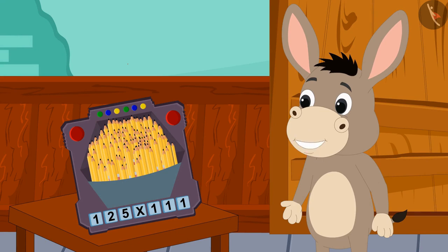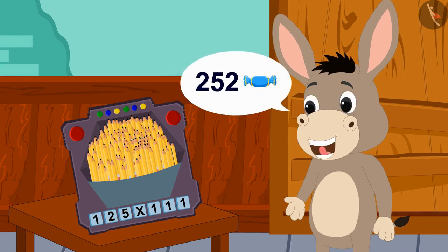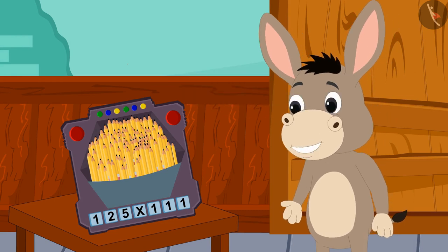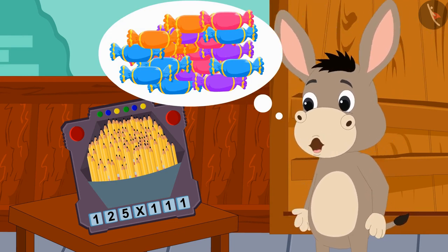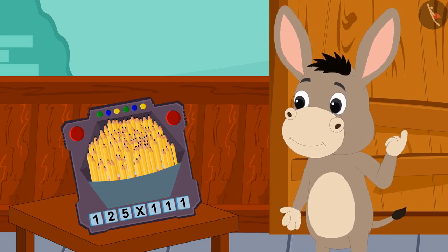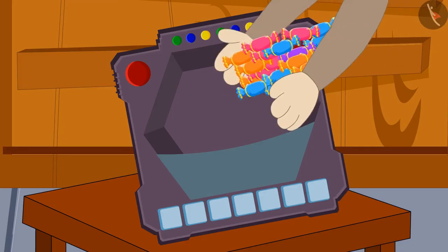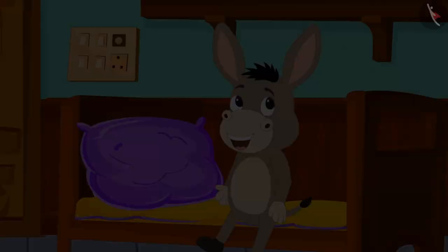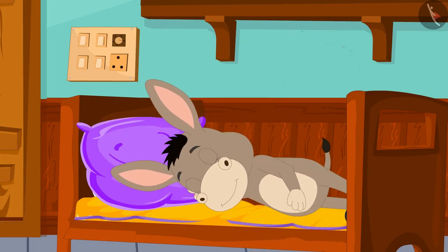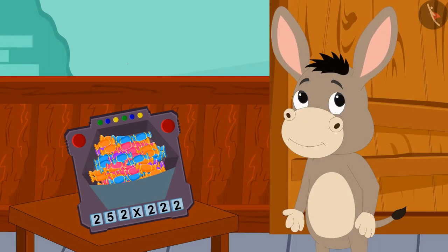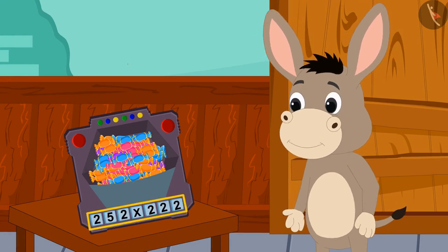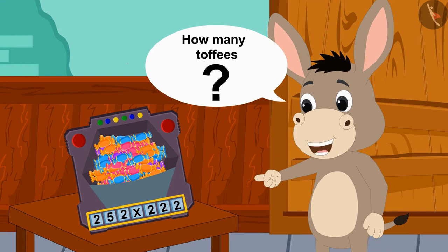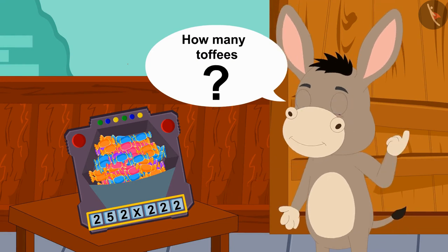Bholla put 252 toffees in it. Who knows if this magic happens again? Then this time I could get a lot of toffees, thought Bholla. He put 252 toffees in the toy's slot and fell asleep. The next day Bholla saw this multiplication in the toy. How many toffees are these now? Bholla is thinking.